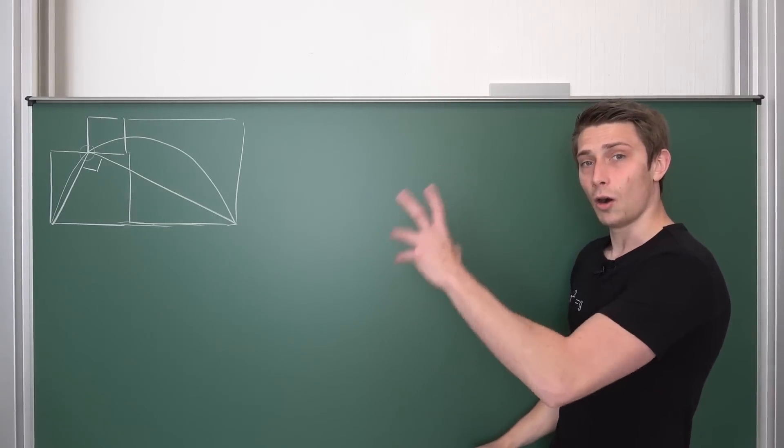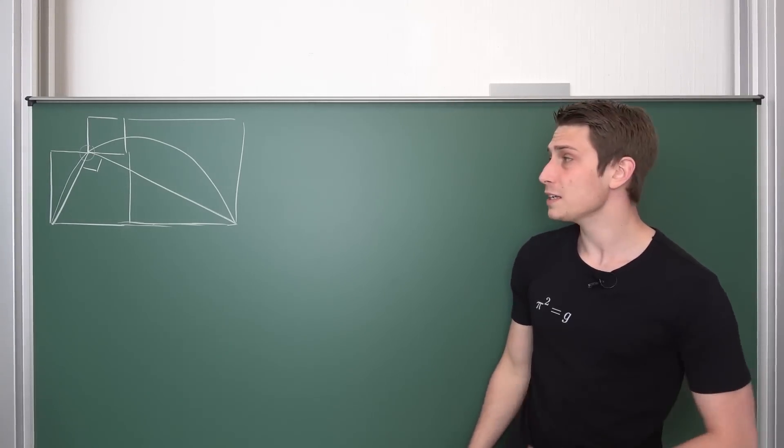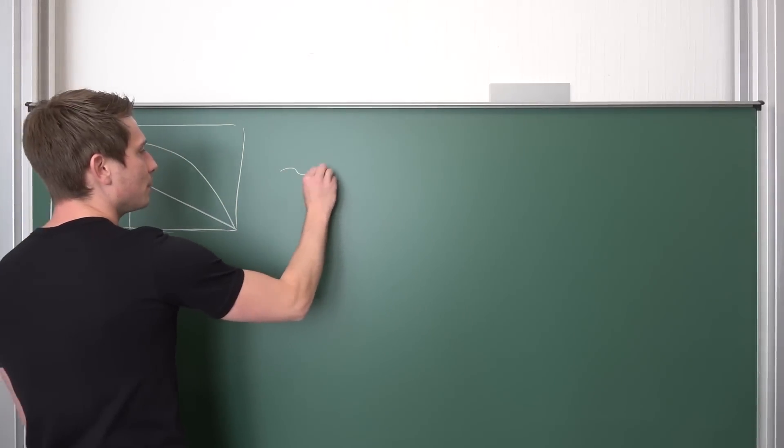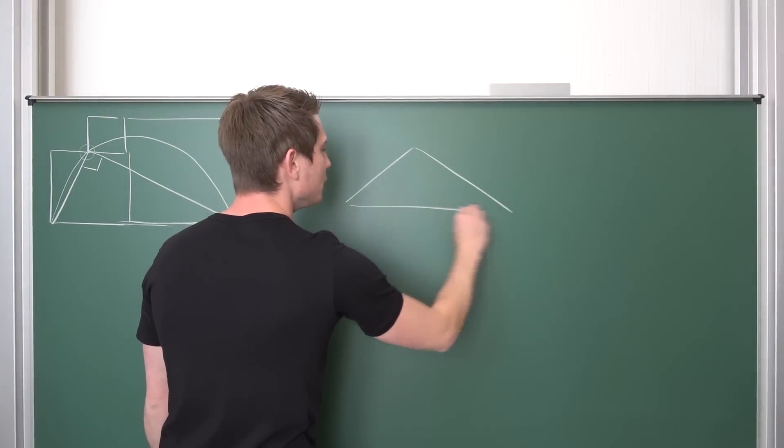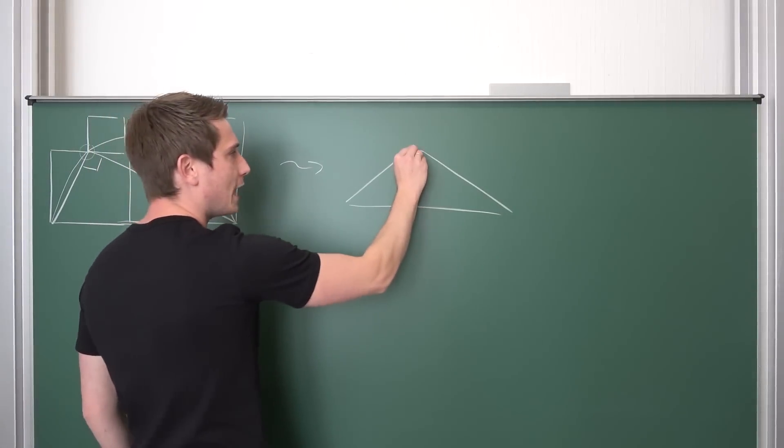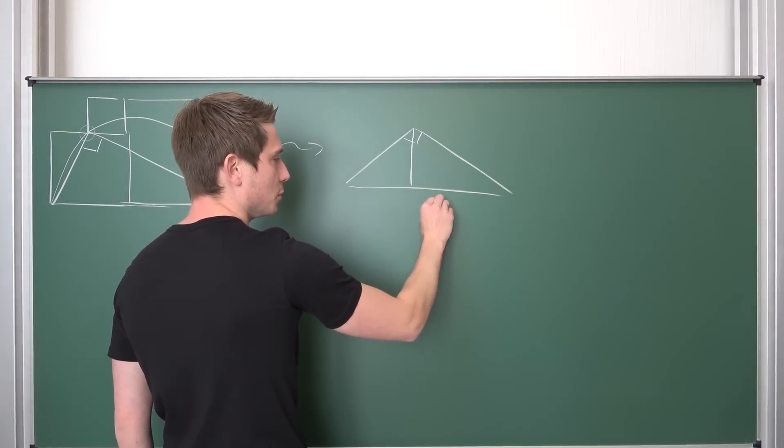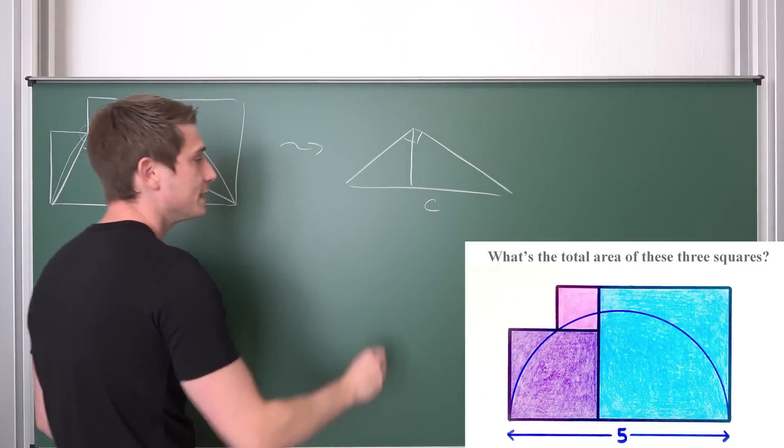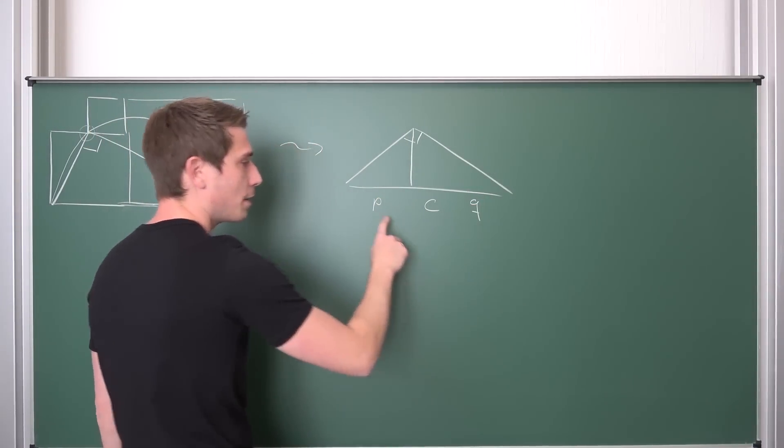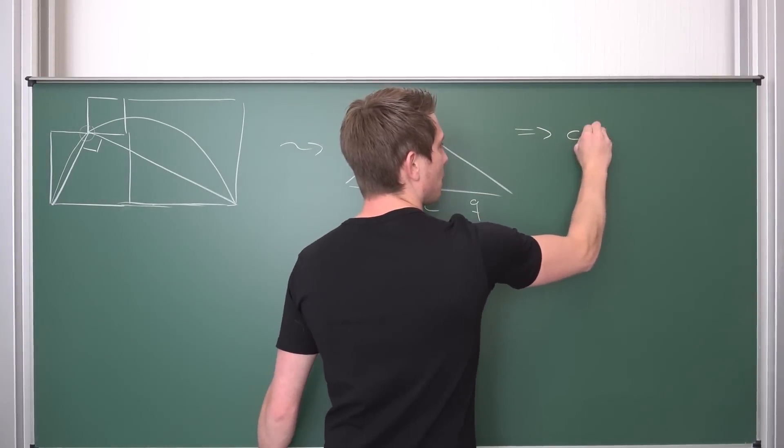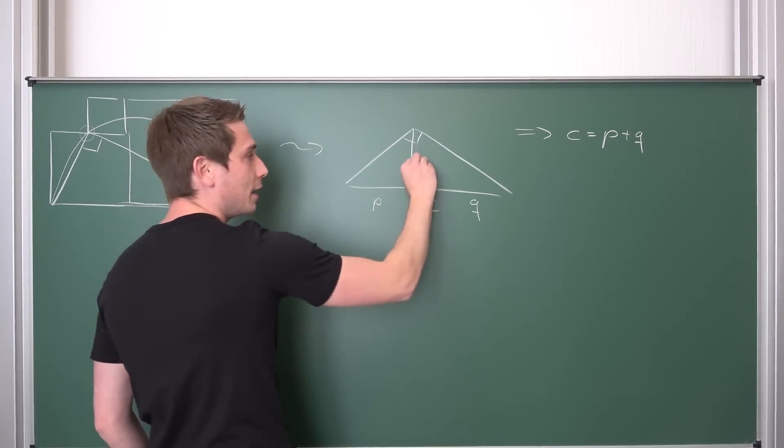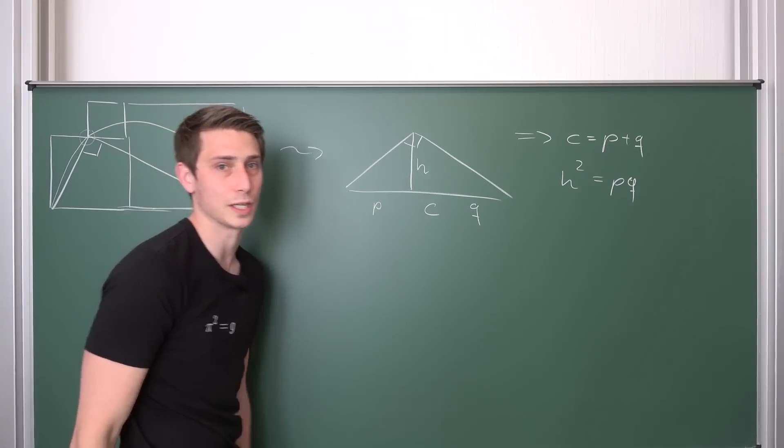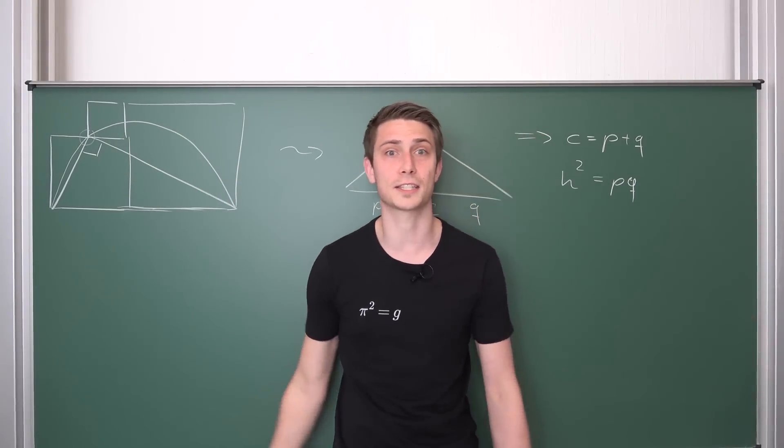We also need another theorem, namely that in the right triangle there's this one theorem about the height. If we put a height into here with hypotenuse C, and we split this thing up into P and Q so C equals P plus Q, we have that our height squared is exactly P times Q. This is the height theorem in the right triangle, called the Höhensatz in German.